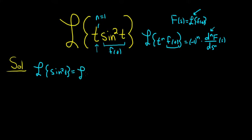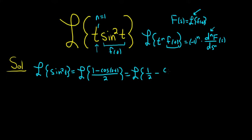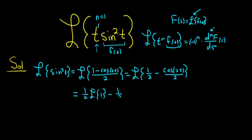For sine squared, there's an identity: it equals (1 minus cosine 2t) all over 2. So the Laplace of sine squared equals the Laplace of 1/2 minus cosine(2t)/2. You can split this up and pull out the 1/2's: it's 1/2 times the Laplace of 1, minus 1/2 times the Laplace of cosine(2t).